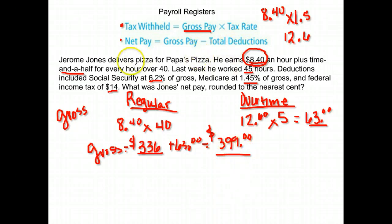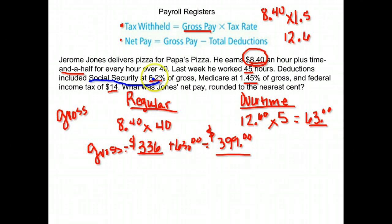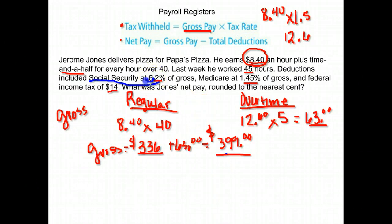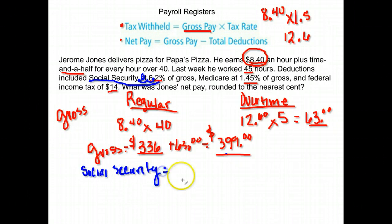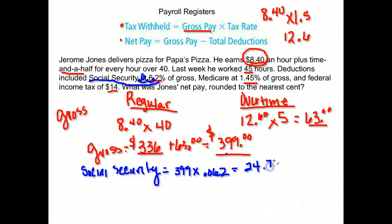He had some deductions — three different taxes. Let's find the amount of each tax one at a time. First, Social Security was at 6.2%. To find the tax amount, we take his gross pay of $399 times the tax rate. We move the decimal two places to the left, giving us .062. So $399 times .062, rounded to the nearest cent, gives us $24.74.